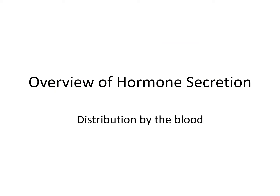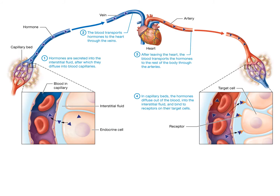Hormone secretion is distributed through the blood. The circulatory system is the means by which hormones are transported throughout the body. Wherever you have vascular tissue, hormones should in theory be able to reach those tissues. The bloodstream goes through the arterial system to the capillaries to the tissues, and then from the tissues back through the veins — this is how hormones are transported throughout the body.